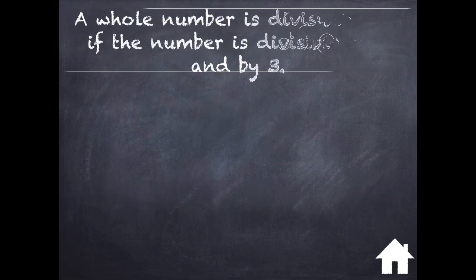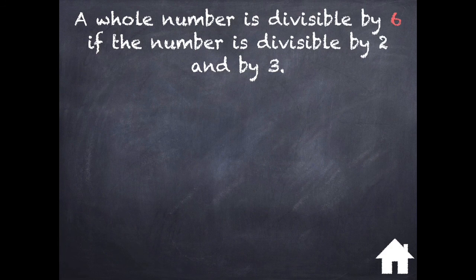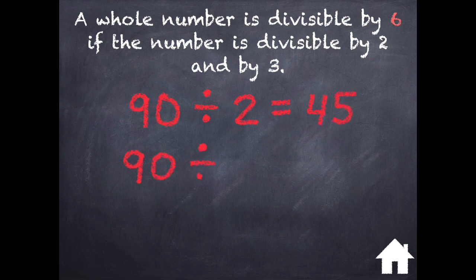A whole number is divisible by 6 if the number is divisible by 2 and by 3. Let's take a look at the number 90. 90 divided by 2 is 45, and 90 divided by 3 equals 30. Because 90 is divisible by both 2 and 3, I know 90 is also divisible by 6. 90 divided by 6 equals 15.